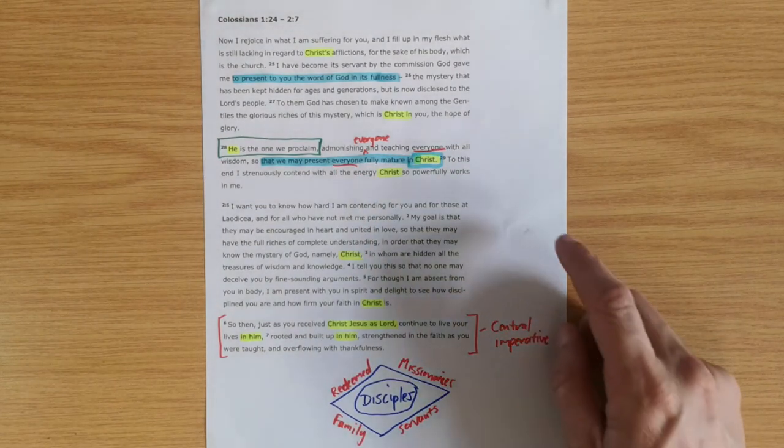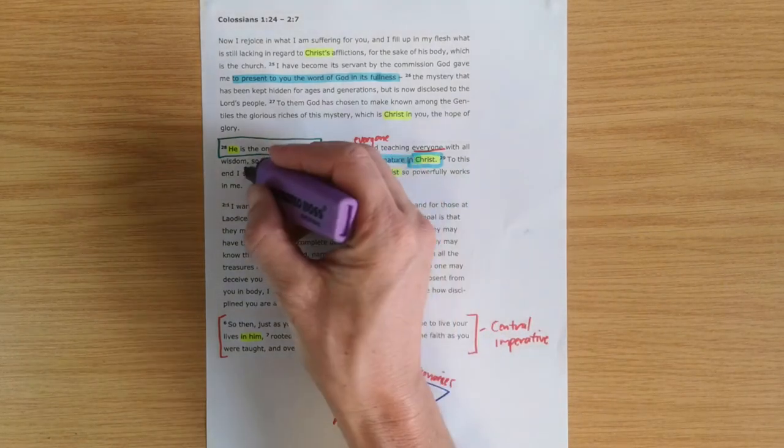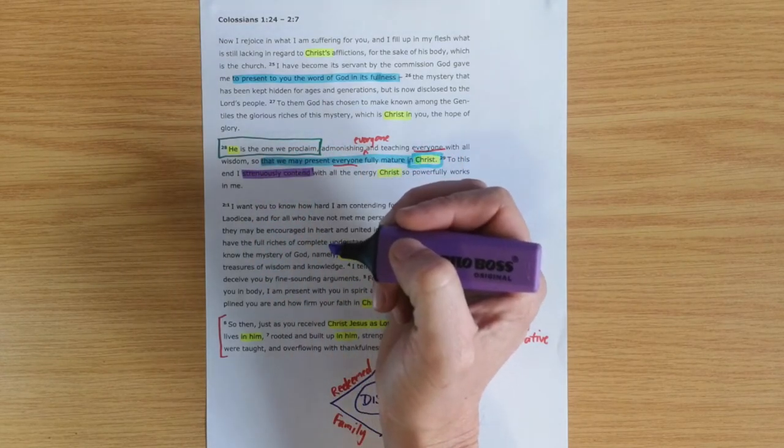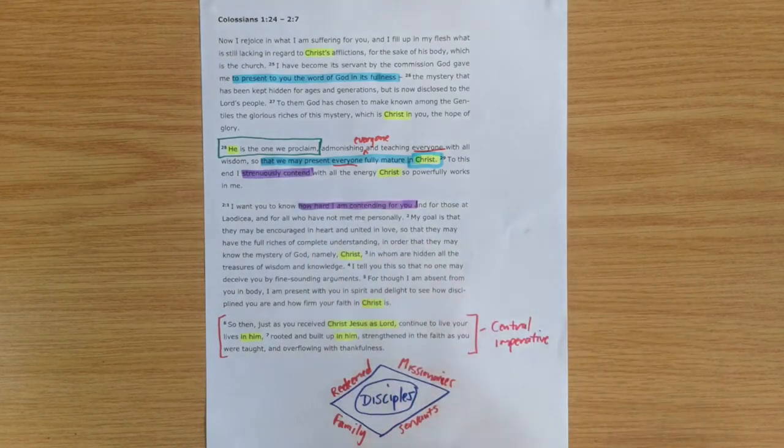It's repeated in the Greek: admonishing everyone, teaching everyone, that we may present everyone fully mature in Christ. He says, 'To this end I strenuously contend,' and we get this idea of the hard work that Paul was putting in—how hard he's contending for all of you.